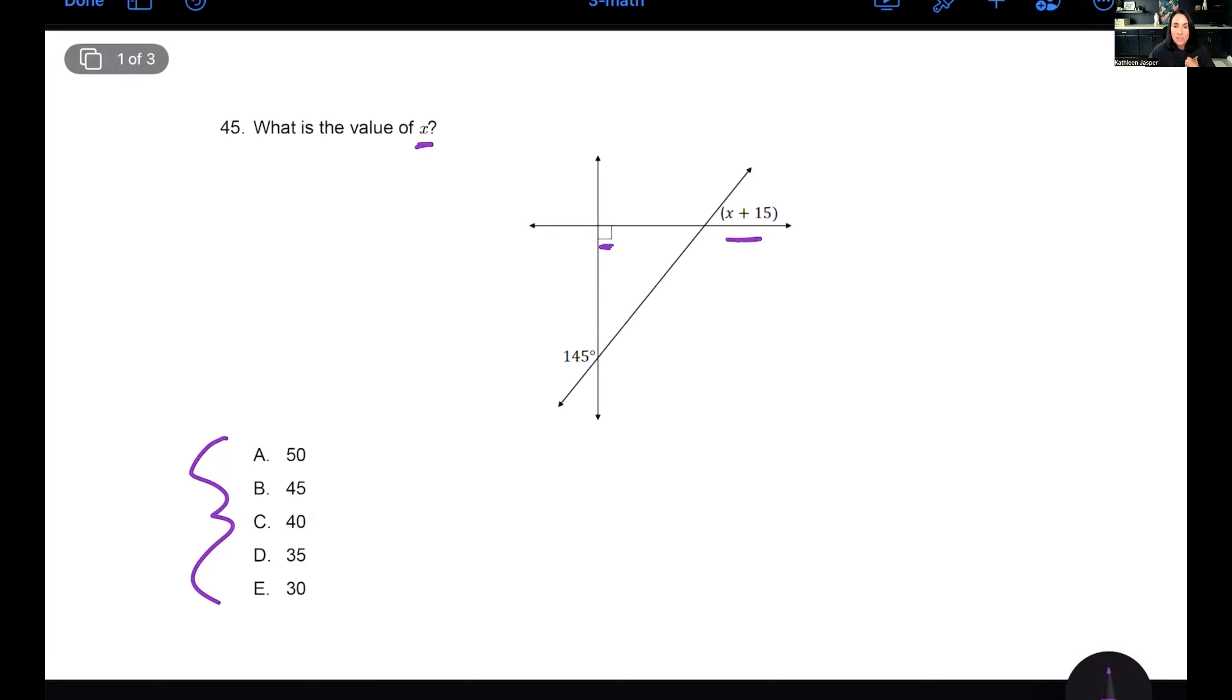So we're going to have to figure this out by doing the actual math. We have a couple things going on here. We've got straight lines, we have this 90 degree box here, we have x plus 15 here, and then we have an angle measure. Now we know that with straight lines, we can use supplementary angles.